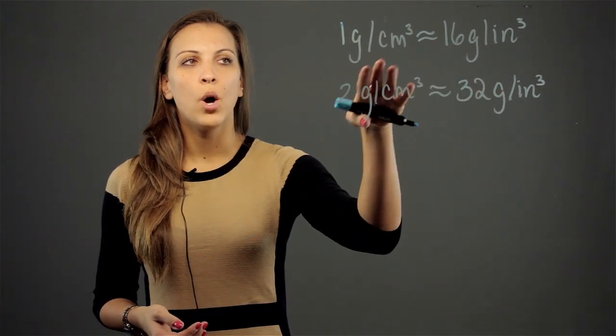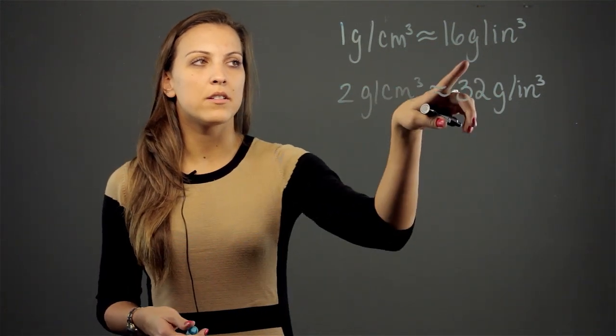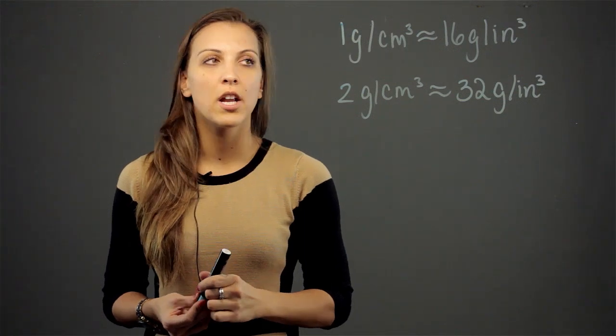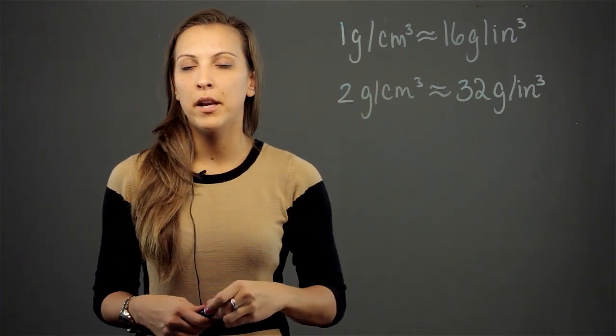So all you have to do is use the conversion you have, 1 gram per cubic centimeter equivalent to about 16 grams per cubic inch, and multiply however many of the amount of grams by 16.